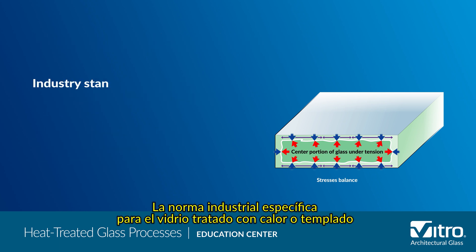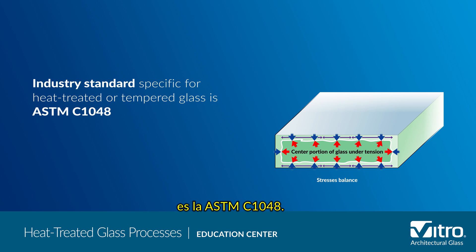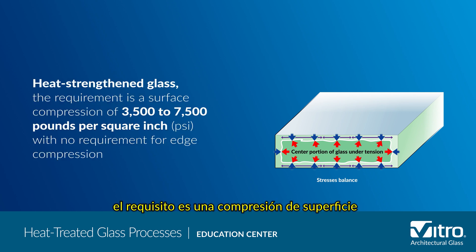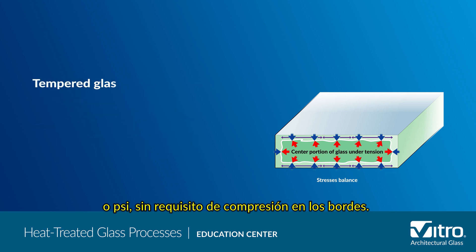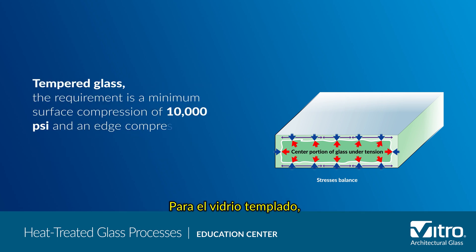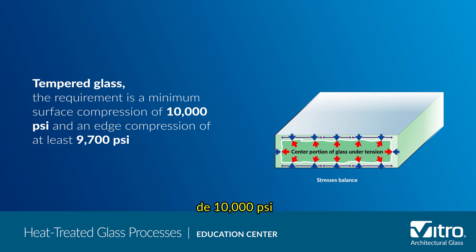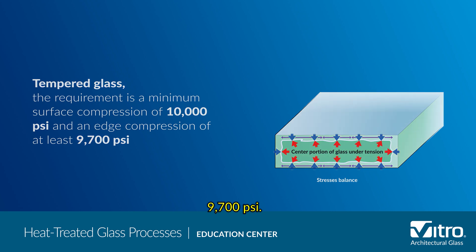The industry standard for heat treated or tempered glass is ASTM C1048. For heat strengthened glass, the requirement is a surface compression of 3,500 to 7,500 psi, with no requirement for edge compression. For tempered glass, the requirement is a minimum surface compression of 10,000 psi and an edge compression of at least 9,700 psi.